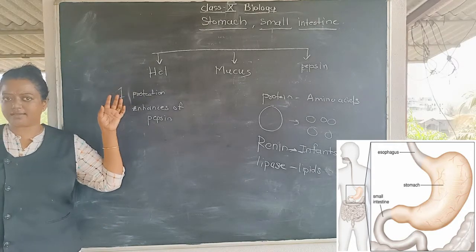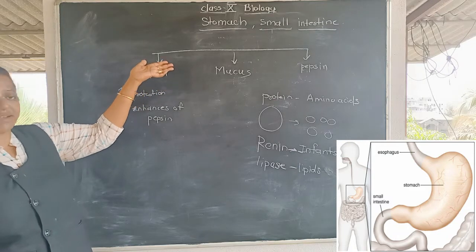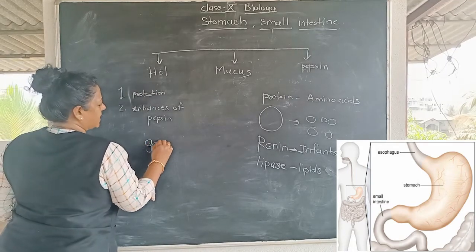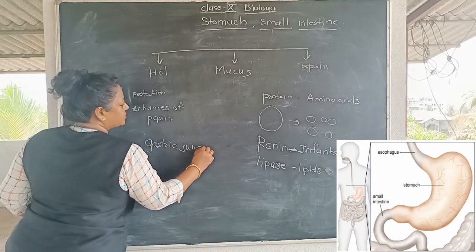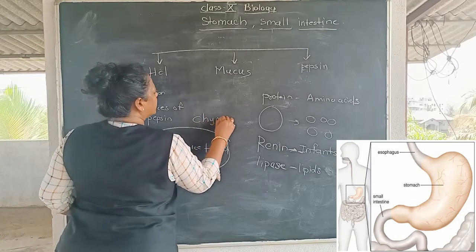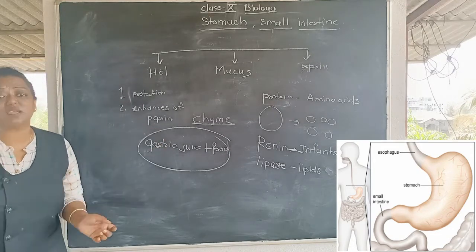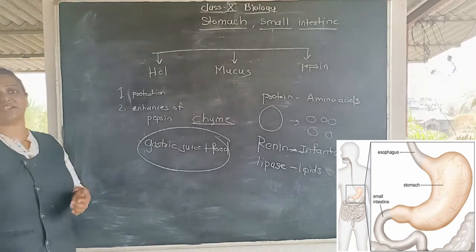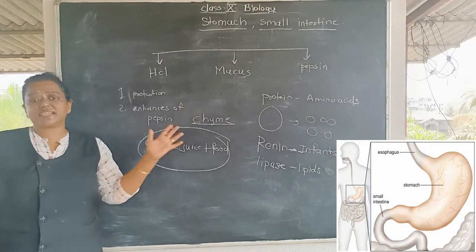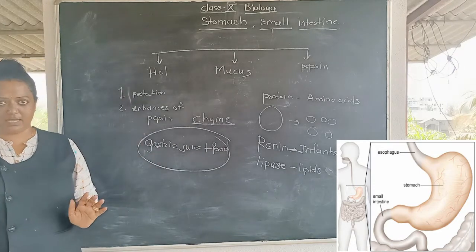The gastric glands secrete HCl, mucus, pepsin, renin, and lipase — together these are called gastric juices. When gastric juices mix with the bolus that has entered from the oesophagus, the mixture is called chyme. The churning process takes place in the stomach — both mechanical breaking down and chemical breaking down of food occur, but not completely.